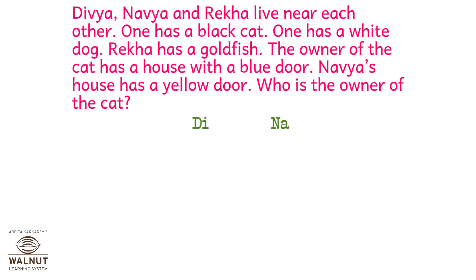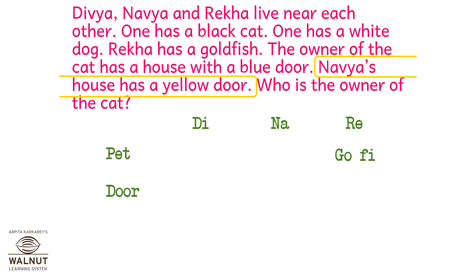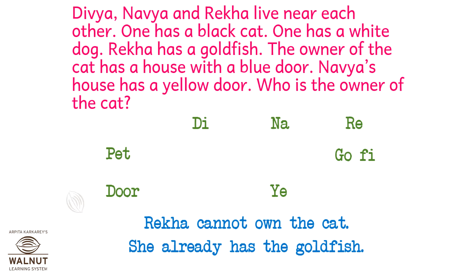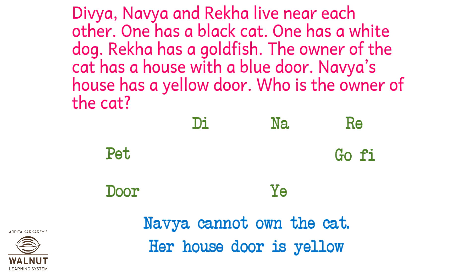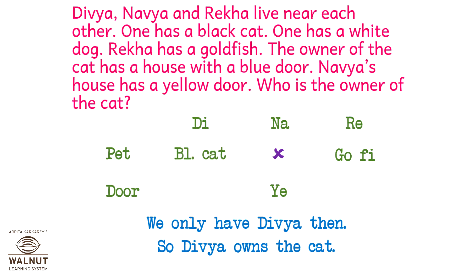Let's draw a table with names — Divya, Navya, and Rekha — and rows for 'pet' and 'door'. Rekha has a goldfish, so we write goldfish under Rekha. Navya's house has a yellow door, so we write yellow under Navya. Rekha cannot own the cat — she already has a goldfish. Navya cannot own the cat — her door is yellow, not blue. So we put a cross there. That leaves only Divya. So Divya owns the cat.